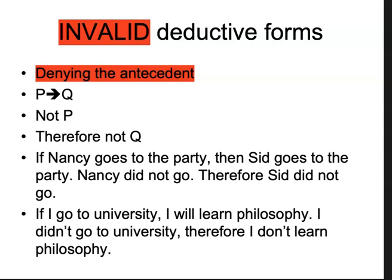It's an invalid, non-truth-preserving form. When the premises are 'if P then Q' and 'not P,' you cannot derive 'not Q,' because it is possible for Q to happen independently. Another example: if I go to university, I will learn philosophy. I didn't go to university — not P — therefore I don't learn philosophy. But I could learn philosophy on my own. What I said in premise one was that if I go to university, then I will learn philosophy. It doesn't say the only way I learn philosophy is by going to university. That's why denying the antecedent is an invalid deductive form.